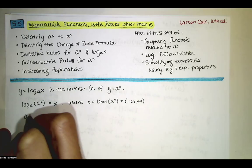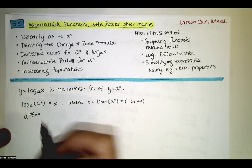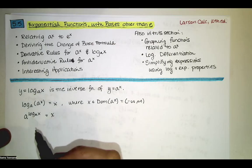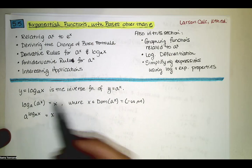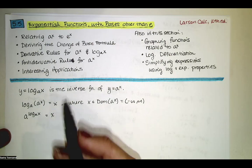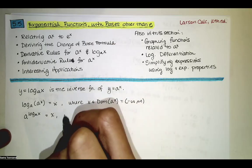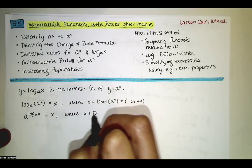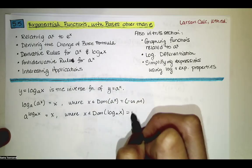When we have a raised to the log base a of x power, those undo each other and we get x back. But here x has to be in the domain of the logarithm. Since the range of a to the x is zero to infinity, the domain of the logarithm is zero to infinity, so our x value has to be in the domain of log base a of x, which is zero to infinity.